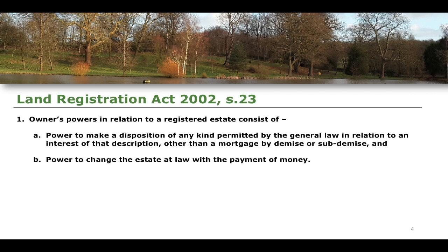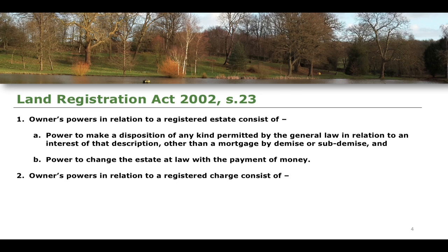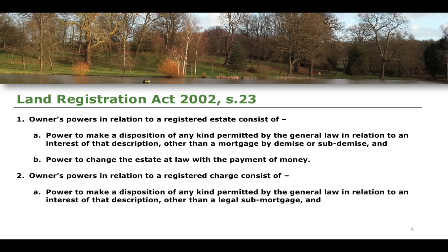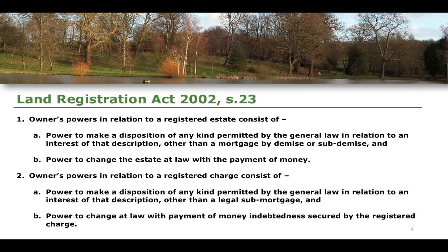Section 23 also includes the power to charge the estate at law with the payment of money. Part 2 of section 23 states that the owner's powers in relation to a registered charge consist of the power to make a disposition of any kind permitted by general law, other than a legal sub-mortgage, and the power to charge at law with payment of money indebtedness secured by the registered charge. You don't need to recite section 23 verbatim — this is just a general overview of the powers a registered title owner holds.